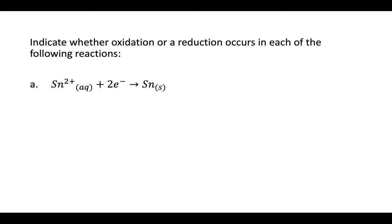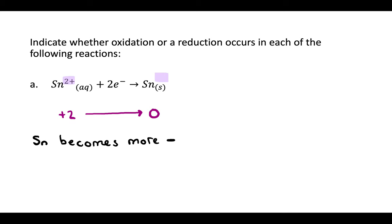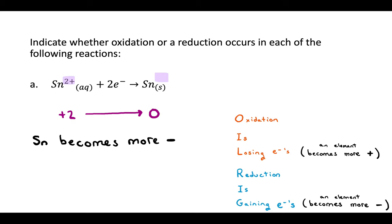The element here is Sn — that's tin. In the beginning, the charge on tin is 2+. On the right side of the arrow, nothing is written in the top right, which means the charge on tin there is 0. So tin becomes more negative, going from plus 2 to 0. If you become more negative, that means that reduction is happening.